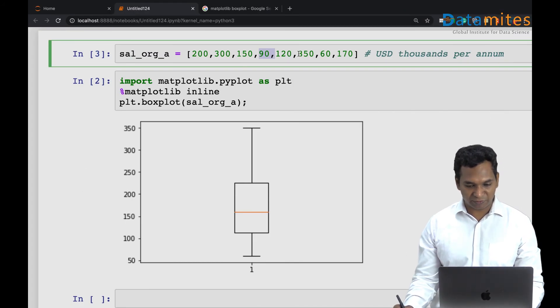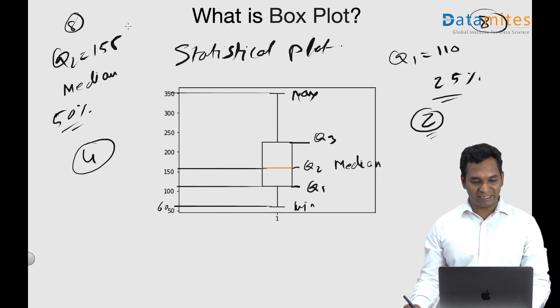One, this is two, this is three, and this is four. So four members are actually less than 155.